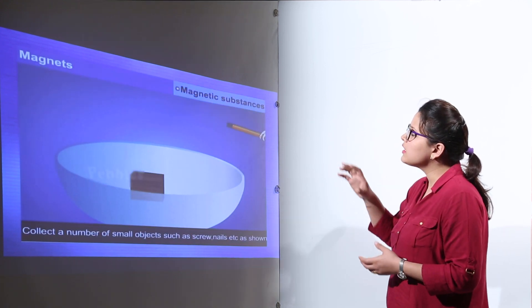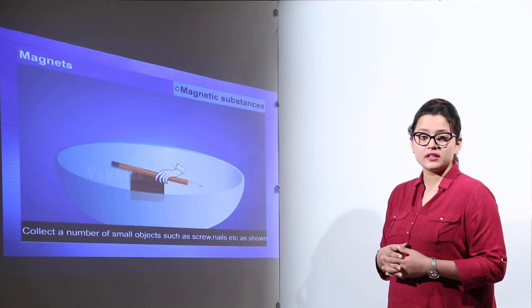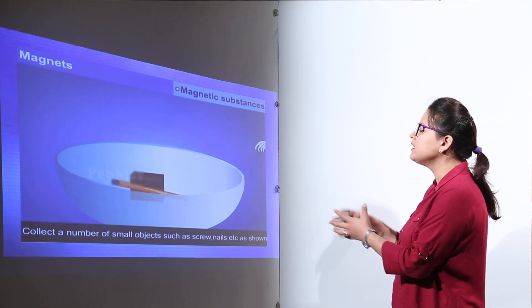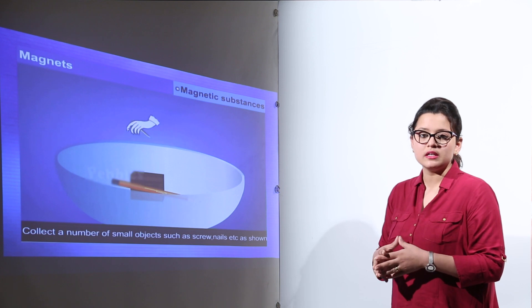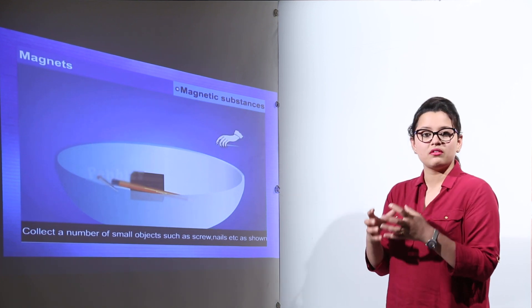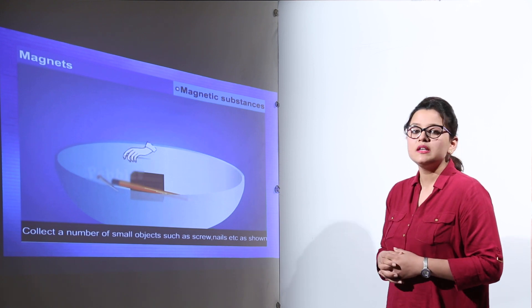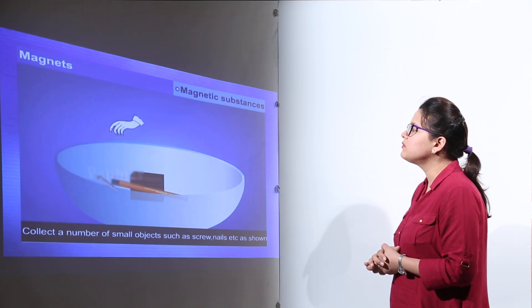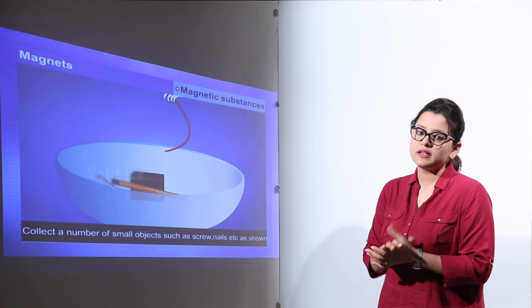Now here we are going to discuss the magnetic substances and non-magnetic substances. For that we are collecting lots of different types of materials. Definitely the magnetic substances will be the ones that will be attracted with the magnet, and the ones that are not attracted with the magnet will be the non-magnetic substances.